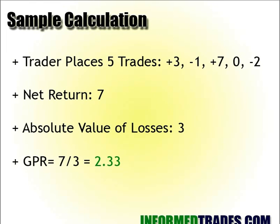That's best understood through an example. Let's say there's a trader who placed five trades in a month. On the first trade, the trader made $3. On the second trade, lost $1. On the third trade, made $7. On the fourth trade, broke even at $0. And the last trade, lost $2. The net return for that month — 3 minus 1 plus 7 plus 0 minus 2 — equals 7. So that's the net return for the month.